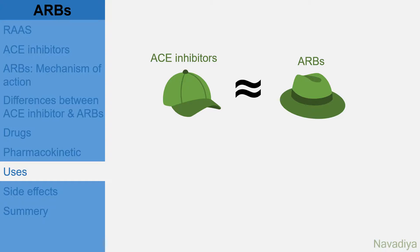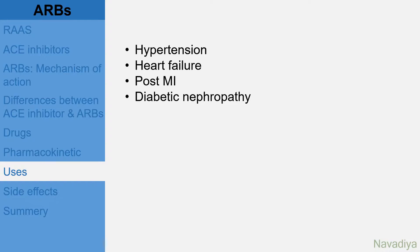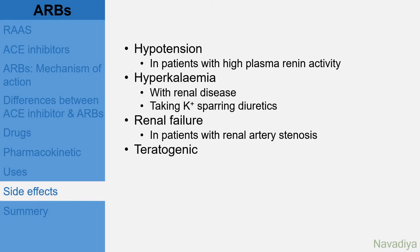Coming to the uses and side effects. As mentioned earlier, the clinical utility and side effects of ARBs are similar to ACE inhibitors, which we have studied in detail in the ACE inhibitors video. They are used in hypertension, heart failure, post-MI patients, and in diabetic nephropathy. Side effects include hypotension especially in patients with high plasma renin activity, hyperkalemia in patients with renal disease and those taking potassium-sparing diuretics, renal failure in patients with renal artery stenosis, and teratogenicity.